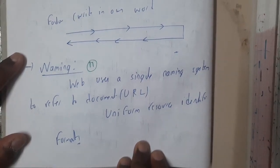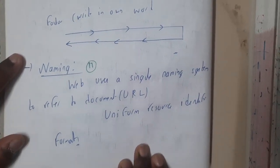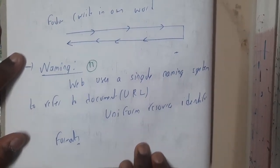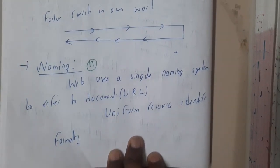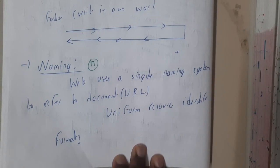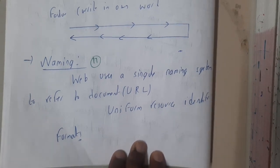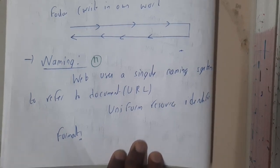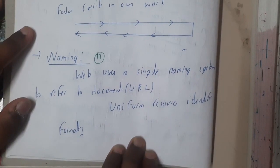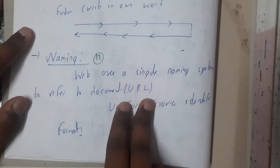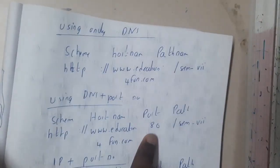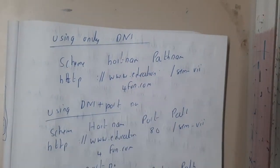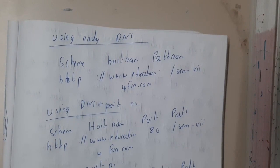Hello guys, we are back with our next lecture. In this lecture, let us go through the concept of naming. Basically, whenever you want to visit a website, you will be following a name. So what is that name? Can we break that name into some meaningful words? Yes, that name is nothing but what we call a URL. The full form of URL is Uniform Resource Identifier.